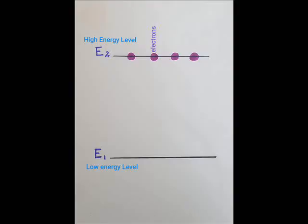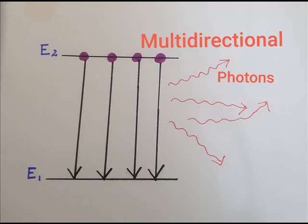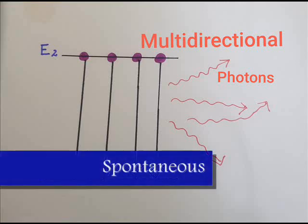Firstly, let's talk about the spontaneous emission of radiation. As you already know, when an electron comes from a higher energy level to a lower energy level, it releases a photon. In this case, an electron is coming down to a lower energy level and it releases energy in the form of photons. This electron comes down on its own without any stimulation — therefore, it is named as spontaneous.